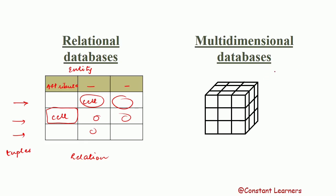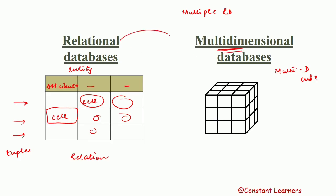In multidimensional databases, data is not stored in the form of a table but in the form of a cube — a multidimensional cube. Multidimensional databases also have tables; we can say that they are made up of multiple relational databases — multiple tables combined to form a multidimensional database. It has multiple dimensions: from each direction we can have one aspect of the data, one dimension.